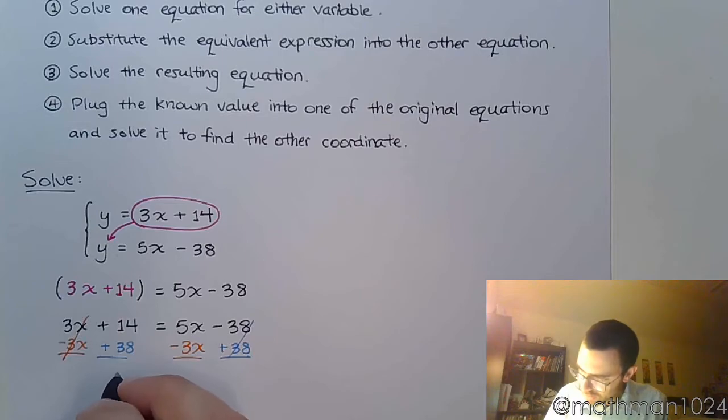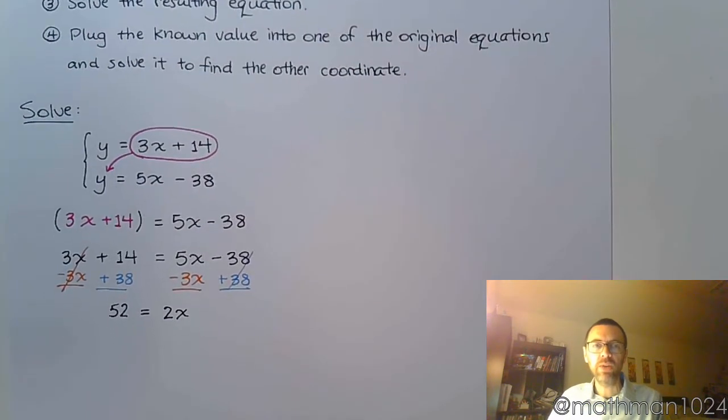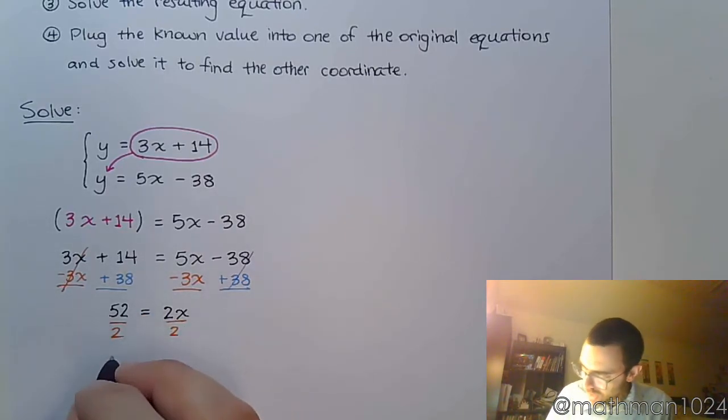So 14 and 38 gives me 52. 5x minus 3x is 2x. And we solve this. Divide both sides by 2, and we find out that x is equal to 26.